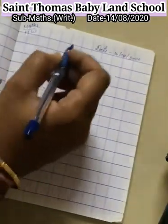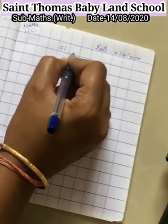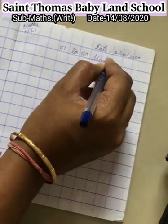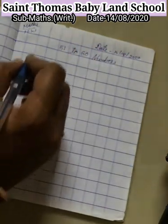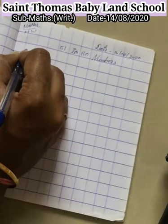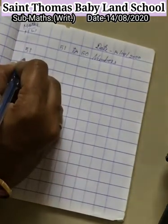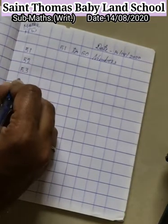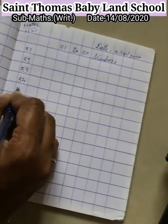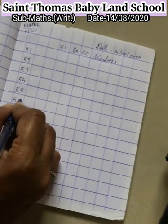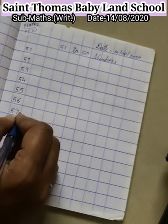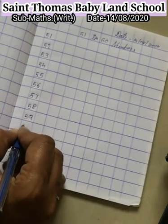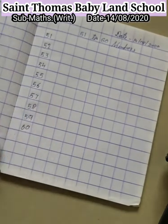Now here write: 5, 1 — 51. 5, 2 — 52. 5, 3 — 53. 5, 4 — 54. 5, 5 — 55. 5, 6 — 56. 5, 7 — 57. 5, 8 — 58. 5, 9 — 59. And 6, 0 — 60. Okay children.